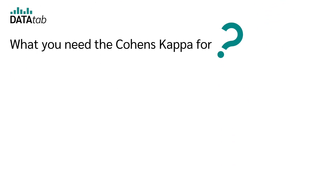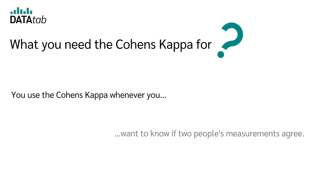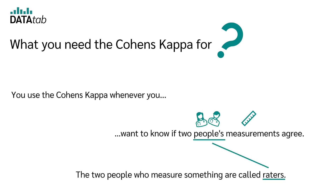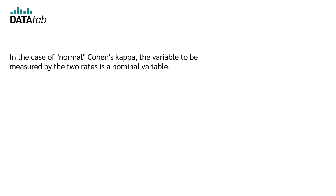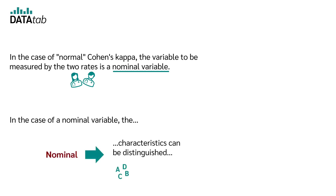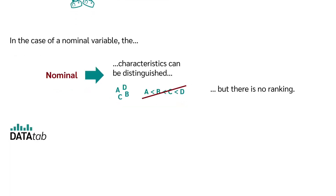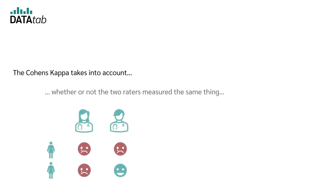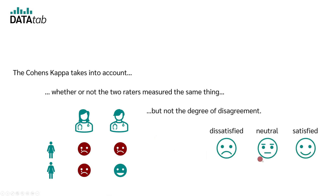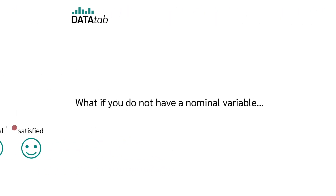What do you use Cohen's kappa for? You use it whenever you want to know if two people's measurements agree. These two people are called raters. In the case of the normal Cohen's kappa, the variable measured by the two raters is a nominal variable. With a nominal variable, the expressions can be distinguished, but there is no ranking between them. Cohen's kappa takes into account whether the two raters measured the same thing, but it does not take into account the degree of disagreement.